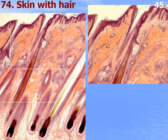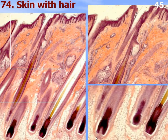The papillary layer of dermis and reticular layer are visible. The hair root consists of pulp, bulb, and papilla. The erector pili muscle and sebaceous glands are also present. Sweat glands with their secretory portions can be identified.